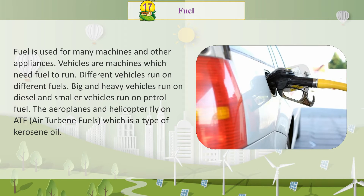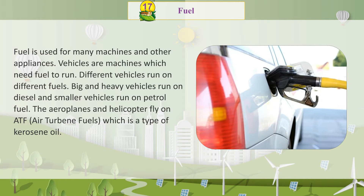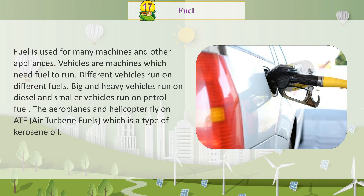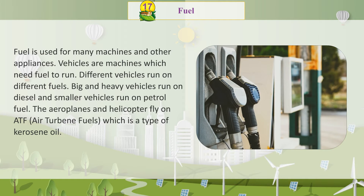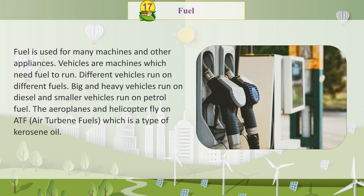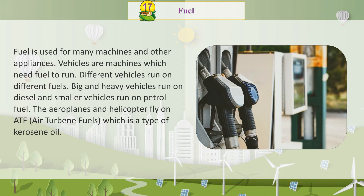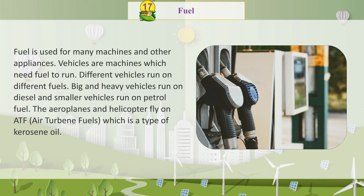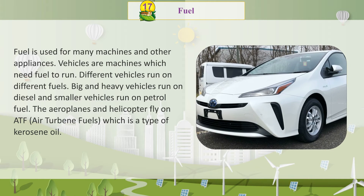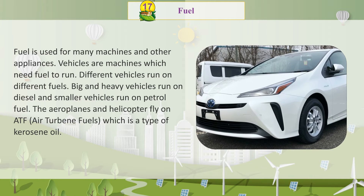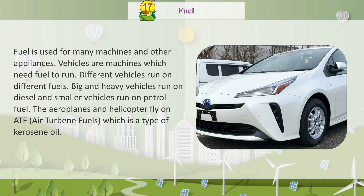Fuel is used for many machines and other appliances. Vehicles are machines which need fuel to run. Different vehicles run on different fuels. Big and heavy vehicles run on diesel and smaller vehicles run on petrol fuel.